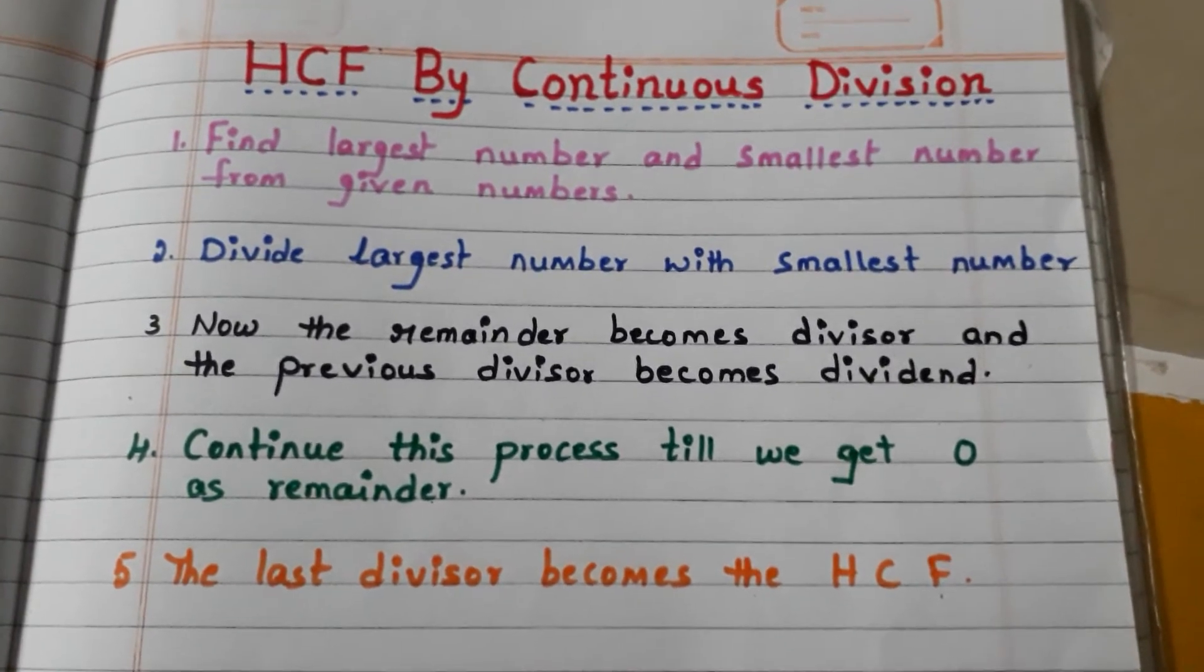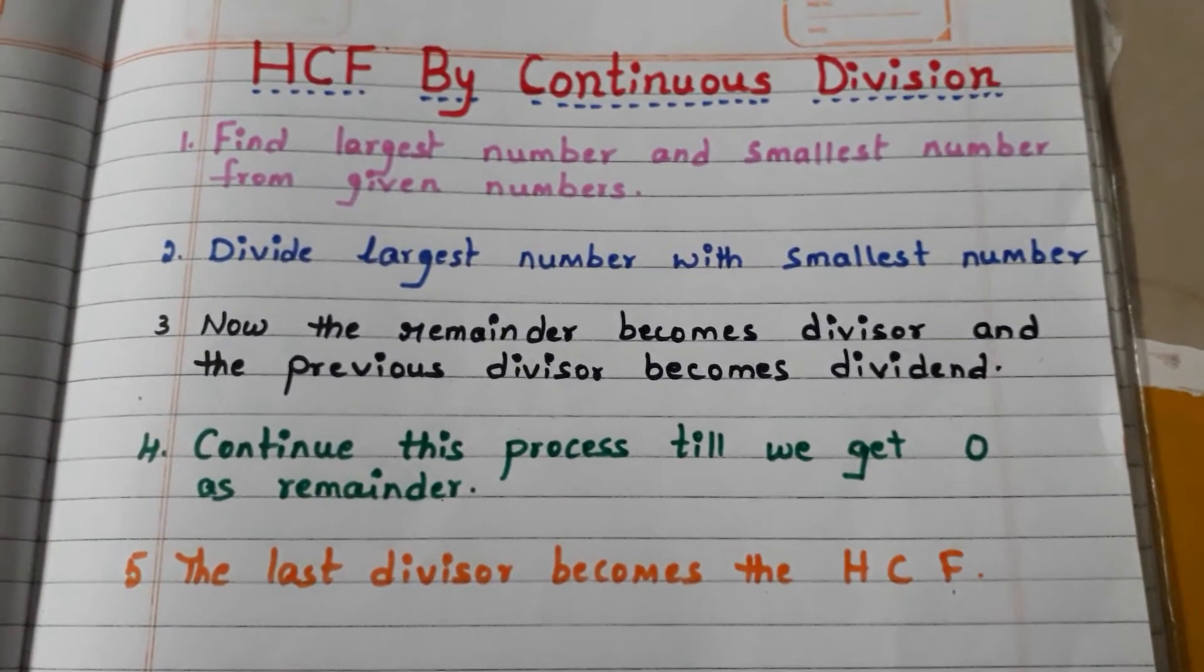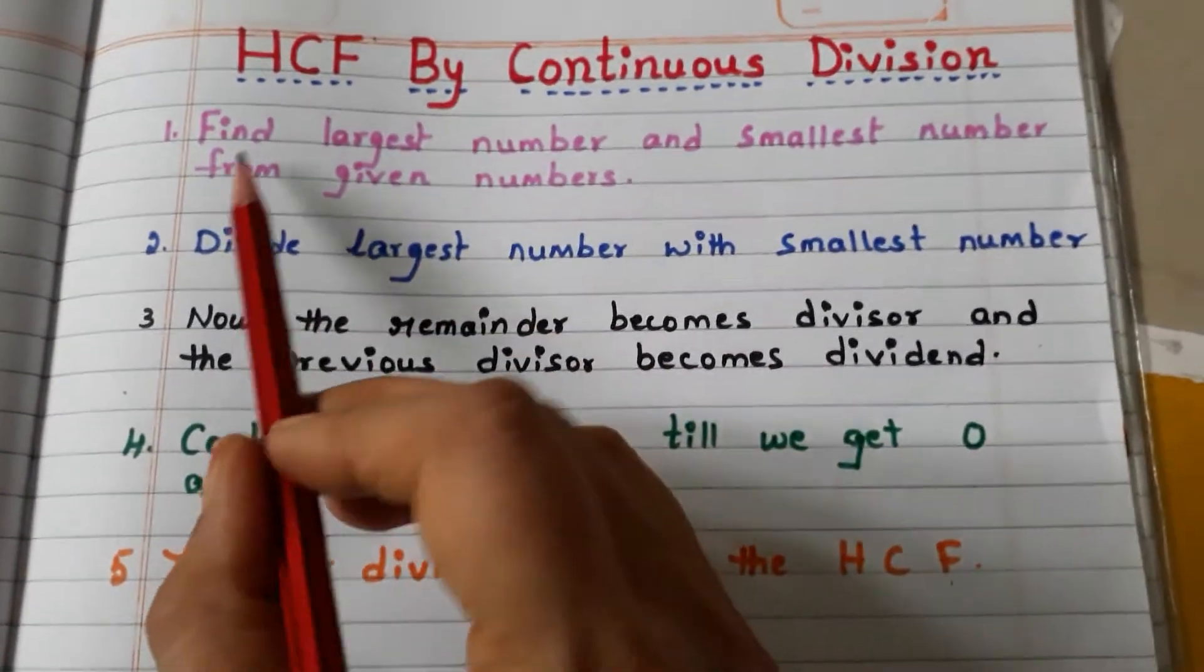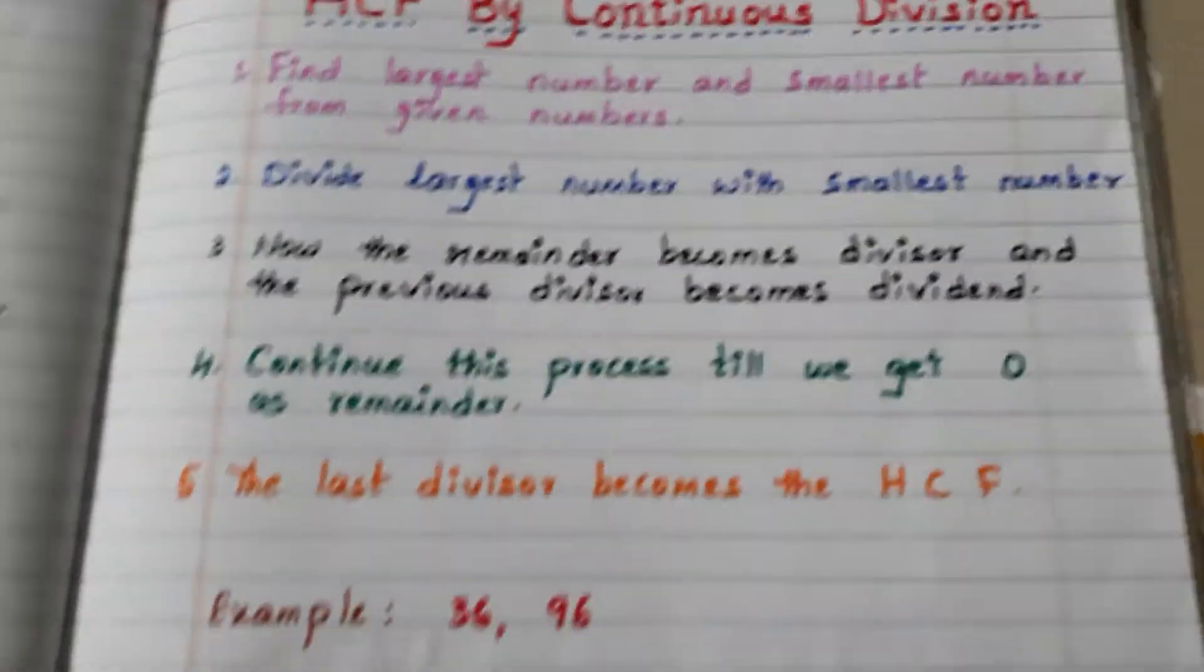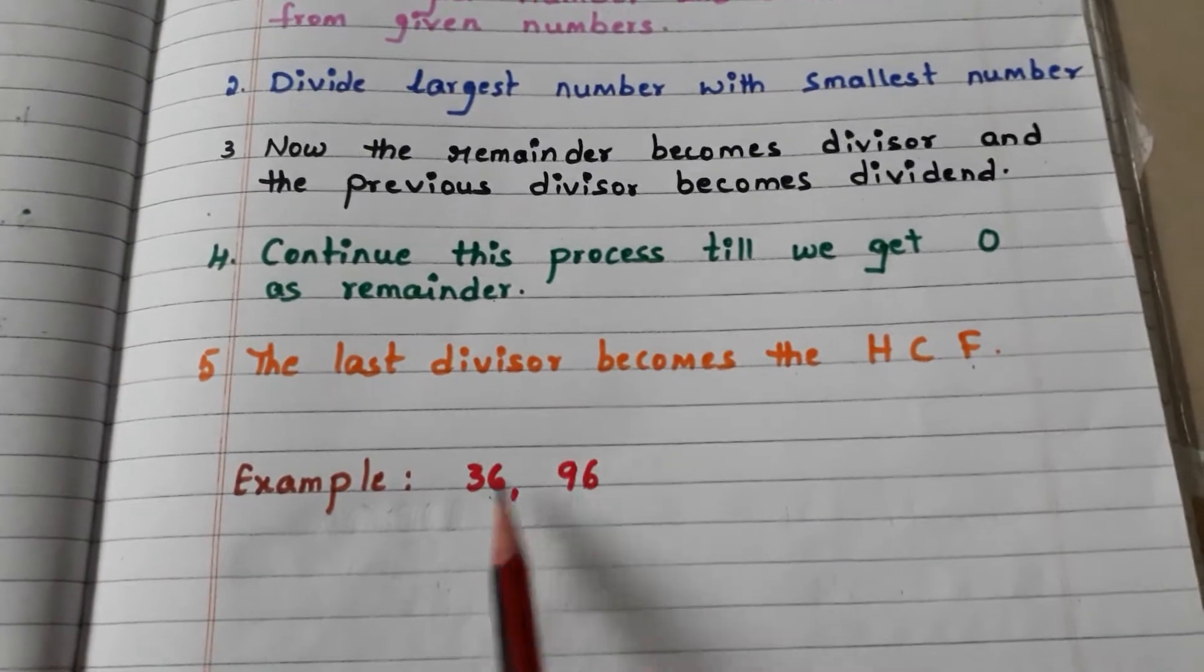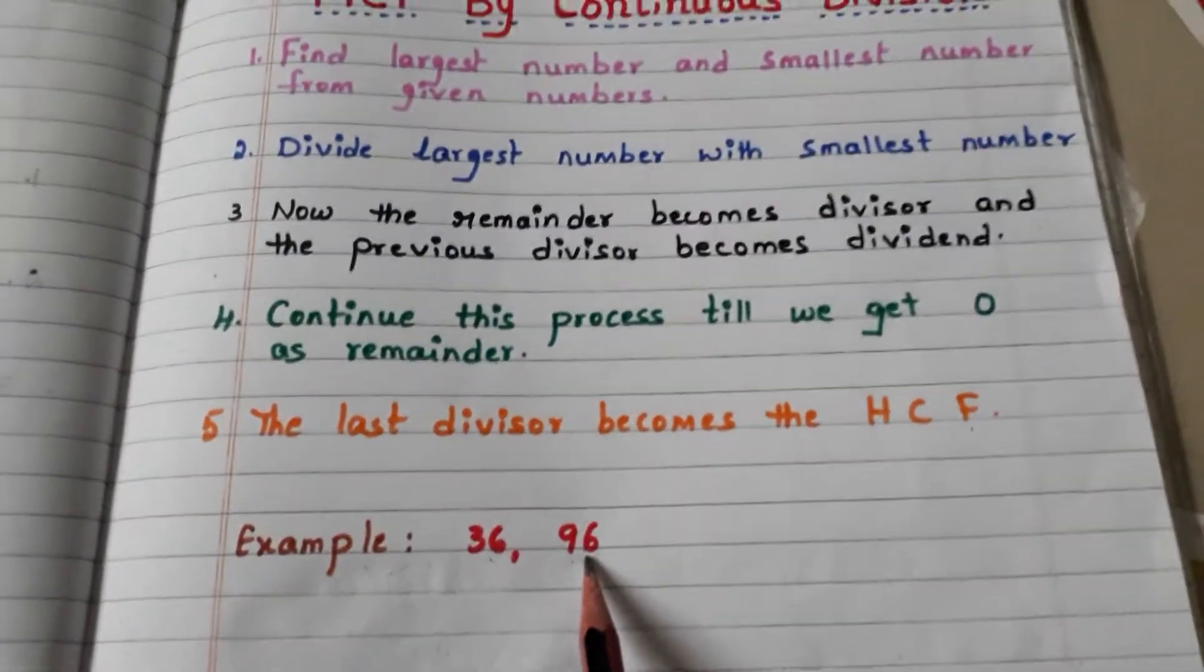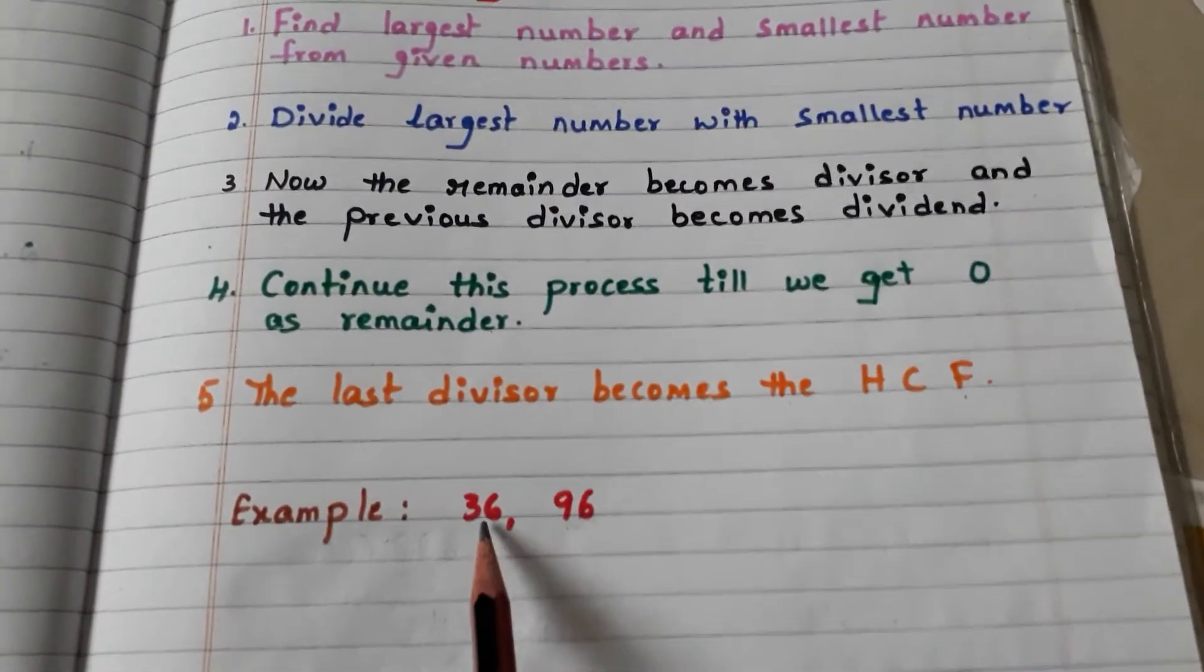First step is find largest number and smallest number from the given numbers. Here in the example we have 36 and 96. So here 96 is the largest number and 36 is the smallest number. Go to step 2: divide largest number with smallest number.